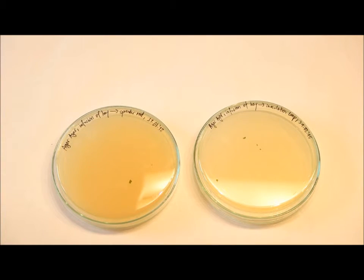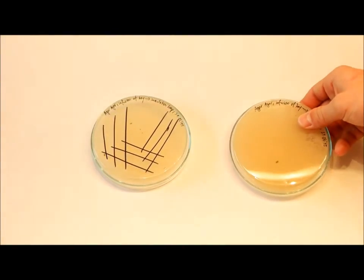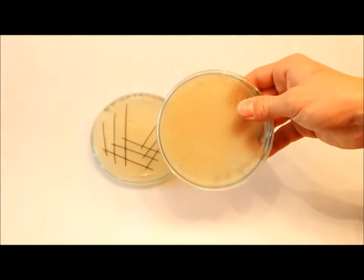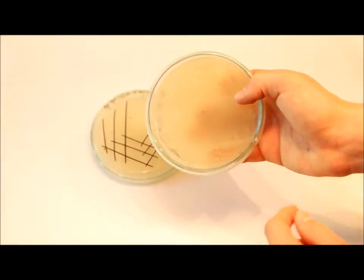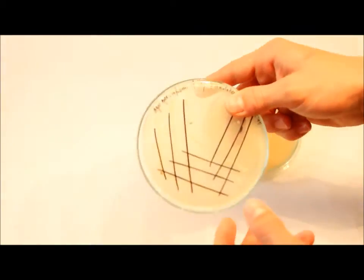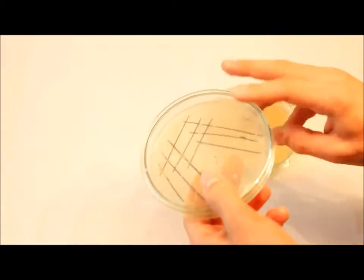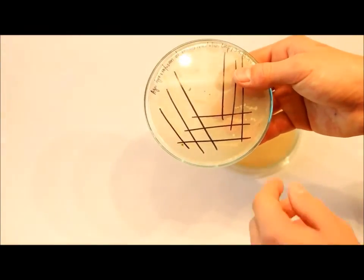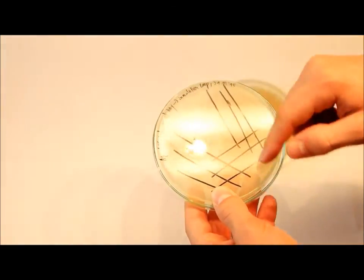So these are the same petri dishes a few days later, two days now, and it did not work perfect because there are some places left without bacteria as you can see here. And on this petri dish with the inoculation loop I made the lines too long so the concentration was still too high because I didn't do it like here.